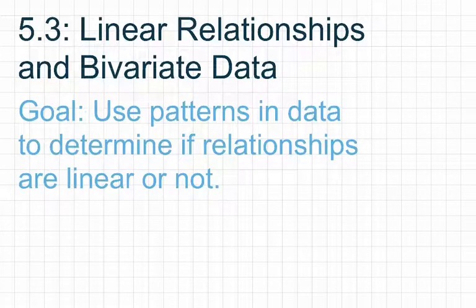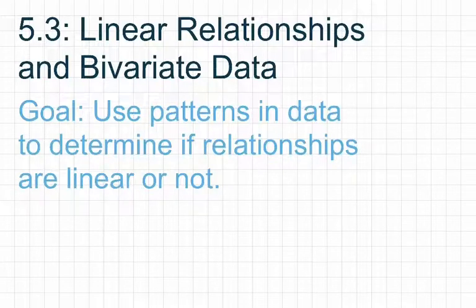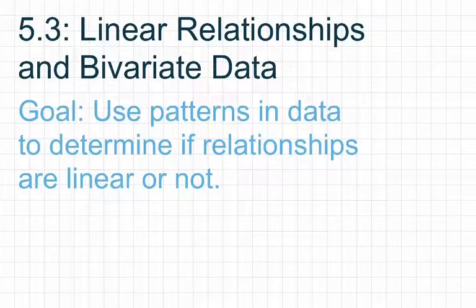For our third and final lesson in Module 5, we're going to be looking at linear relationships and bivariate data. Our goal is to use patterns and data to determine if relationships are linear or not. We're going to be looking at graphs and tables, sometimes using those to write equations. Essentially, we're going to be figuring out if a set of data represents a linear relationship or not — does the graph form a straight line or a curved line? If it's a straight line, it's linear. If it's a curved line, it is non-linear.